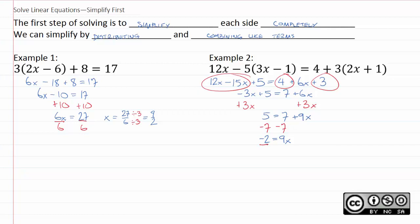And to finish this whole problem off, of course, we divide both sides by 9. And perforce, we get x equals negative 2 ninths.